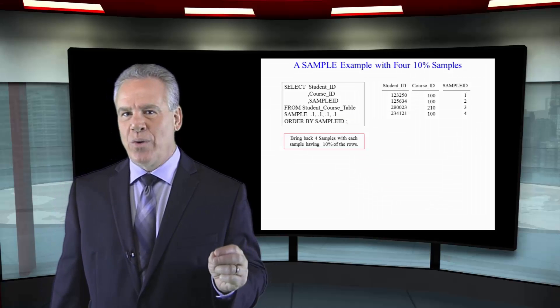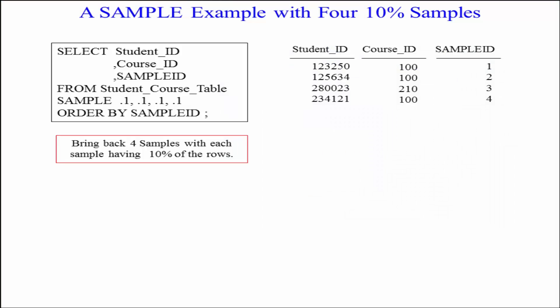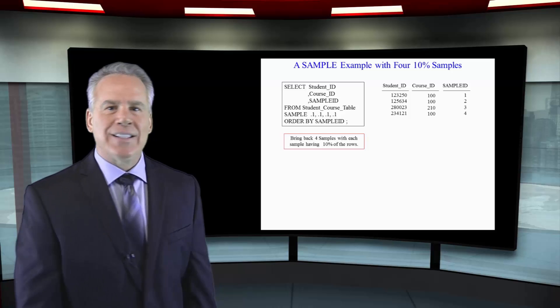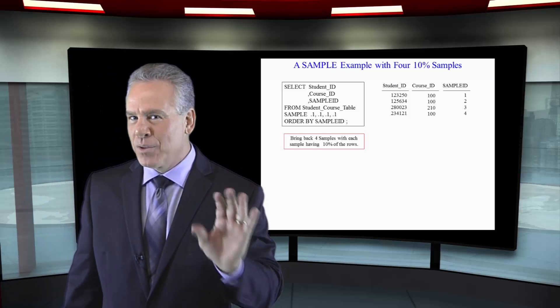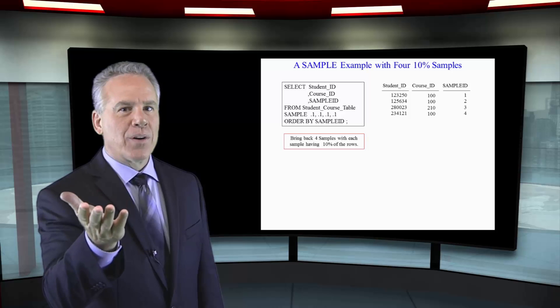As you can see in this query, I'm going to take four 10% samples. So I select the student ID, the course ID, the sample ID from the student course table — SAMPLE .1, .1, .1, .1. And as you can see, since I ordered by the sample ID, it's going to bring back one row in each sample. Now there are 14 rows in this table, and if I'm taking a 10% sample that should be 1.4 rows, but we can't bring back .4 rows, so it's only able to bring back one row per sample ID.